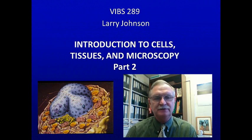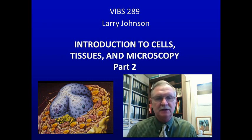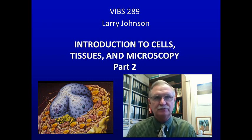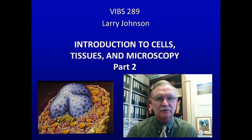Today we're going to talk about cells, tissues, and microscopy, part two. We'll preview ultrastructural features of the cells — that is, the organelles within the cells. We'll talk about how cells make tissues, tissues make organs, organs make organ systems, and the body is composed of organ systems. We'll also talk about light and electron microscopy, how a cell fits in the universe, and how to prepare specimens to see cells. We will summarize ultrastructural characteristics of the cell.